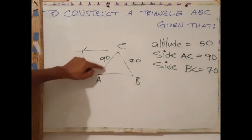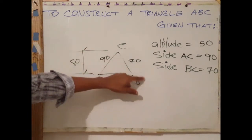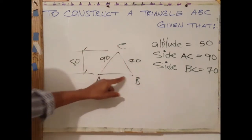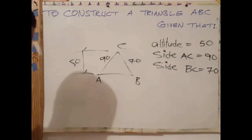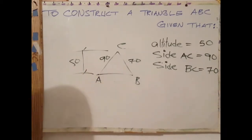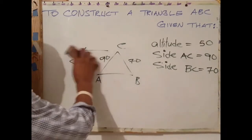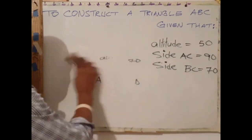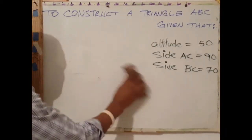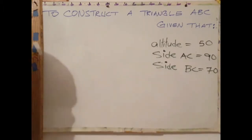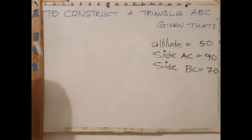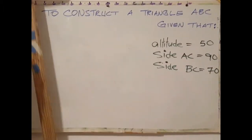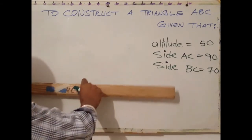We don't know what side AB is. To construct this, we start by drawing a random length horizontal line.